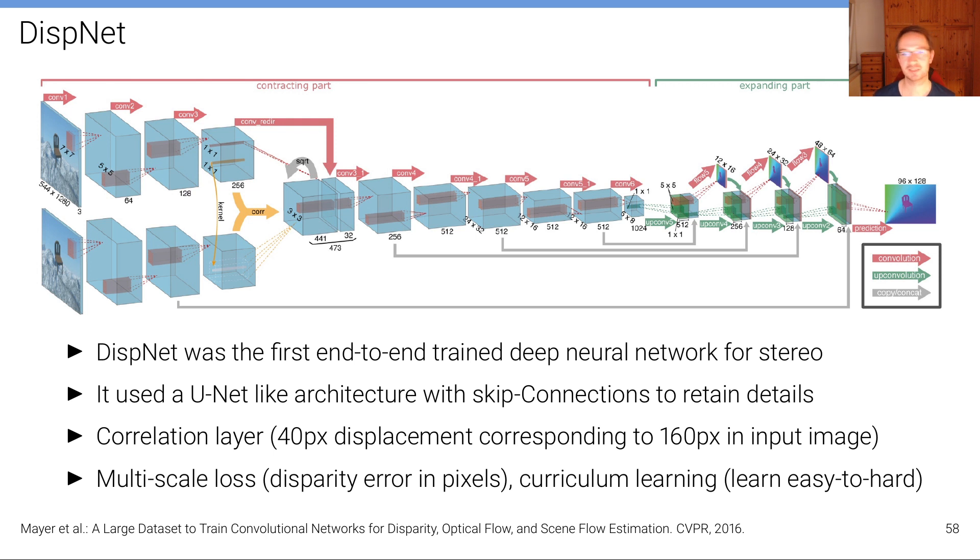It turns out that actually even without this correlation layer, just combining, concatenating these features here, we can already get good results, but this improves results slightly.